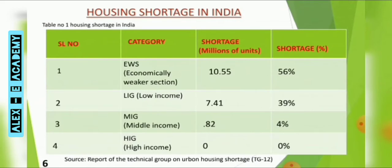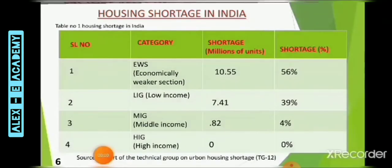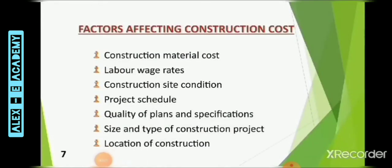Now I hand over to Abarna. The next slide is factors affecting construction cost. The first one is construction material cost, which consists of material cost, shipping charges, and taxes.